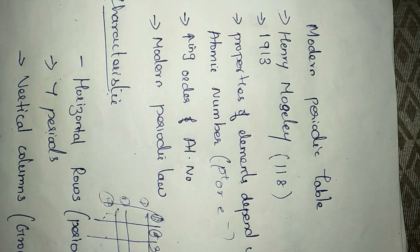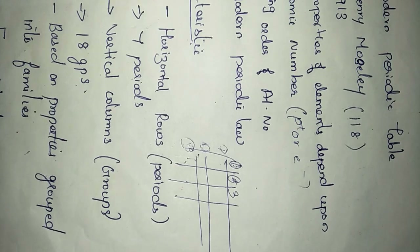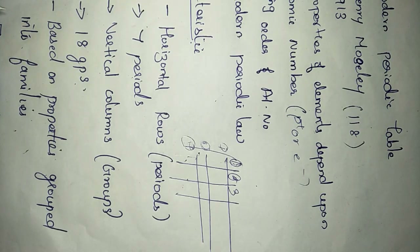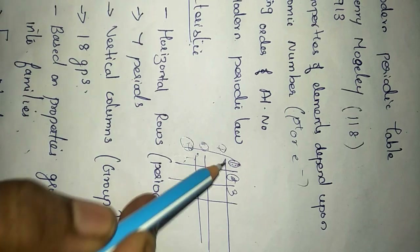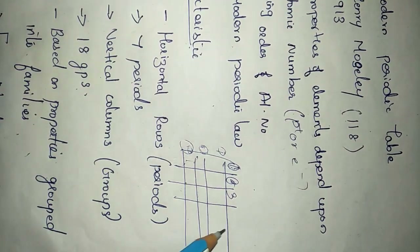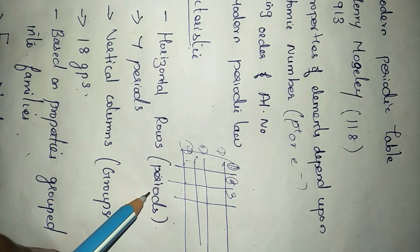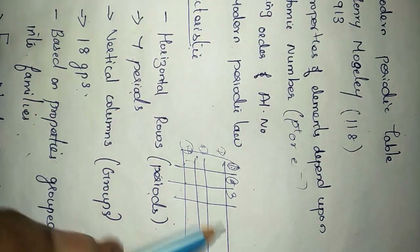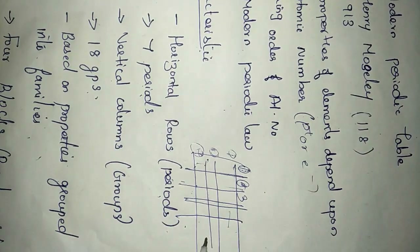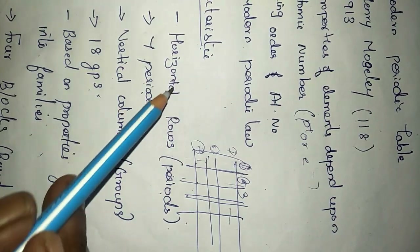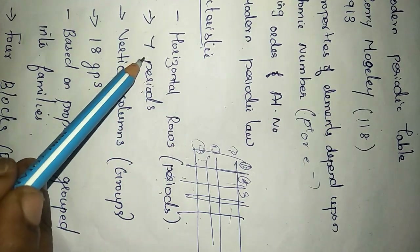The table contains 118 elements arranged in increasing order of atomic number. Like Mendeleev's periodic table, this table also has horizontal rows called periods. The modern periodic table contains seven periods. The vertical columns are called groups, and there are 18 groups in total.